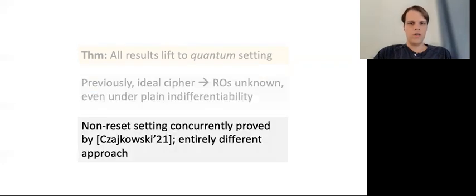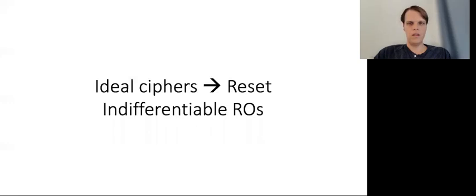There is a concurrent and independent work that also proves that ideal ciphers imply random oracles in the quantum setting, and in particular this work proves the quantum indifferentiability of the full sponge construction. However, that work uses completely different, more sophisticated quantum techniques. Due to lack of time, I won't talk about all the results, but I want to discuss what could be seen as the main result: building a reset indifferentiable random oracle from an ideal cipher.